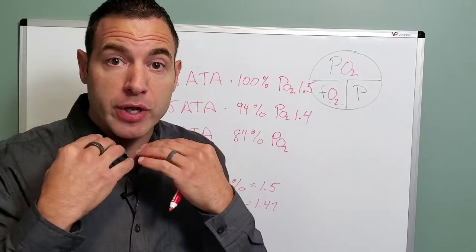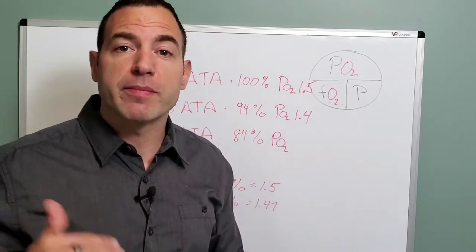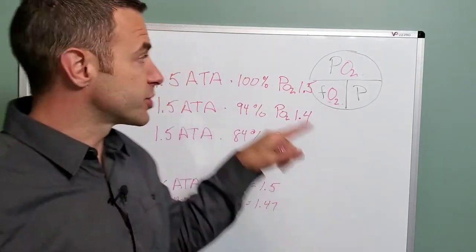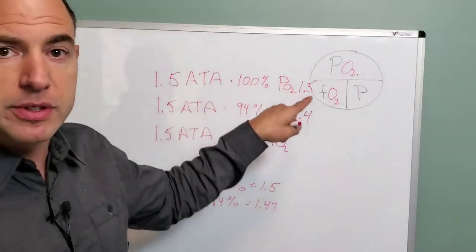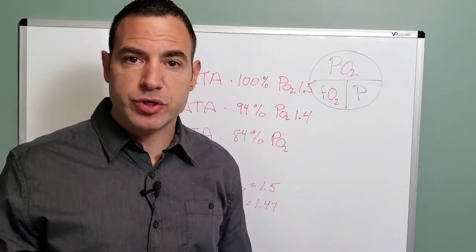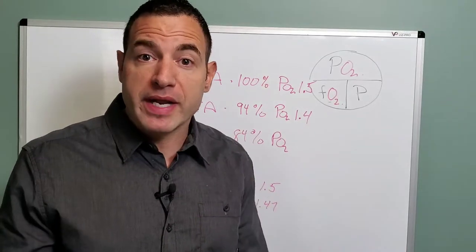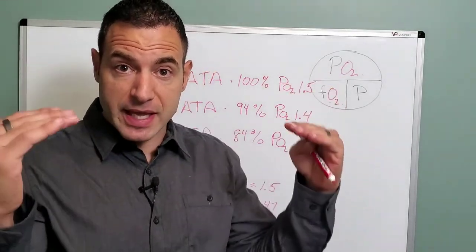And so if they're wearing a hood and it's sealed perfectly, well then maybe they're getting 100% oxygen. So that would be a similar scenario like this. But if we're using an oxygen concentrator and that's already 94% oxygen, they're getting less.